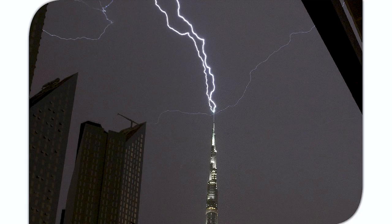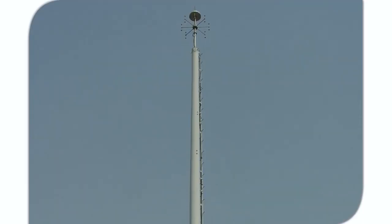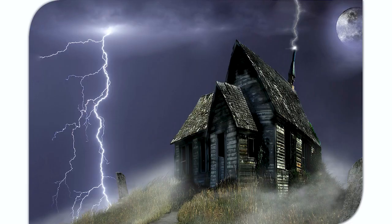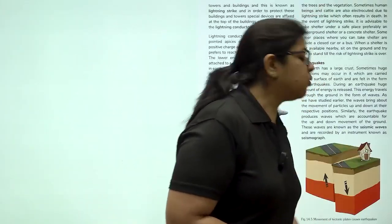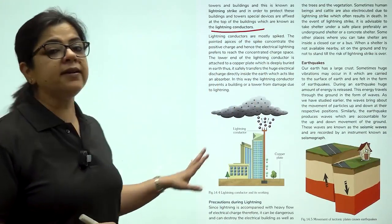A lightning conductor is installed on top of all tall buildings to protect the building from the effect of lightning. A lightning conductor is a long rod of iron or copper that runs from the top to the bottom of the building. The lower end of the rod has a metallic plate made of copper which is buried deep into the earth. When lightning strikes, the conductor provides a path for the charge to pass through the earth, thus protecting the building from being damaged.